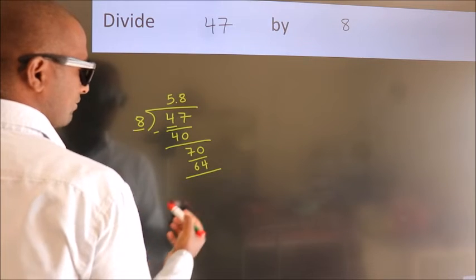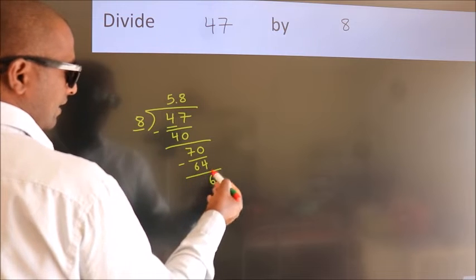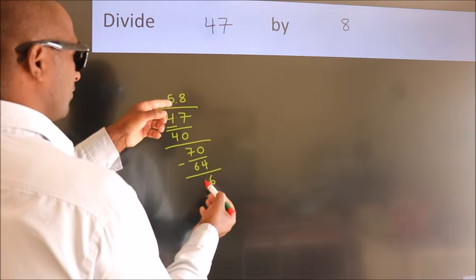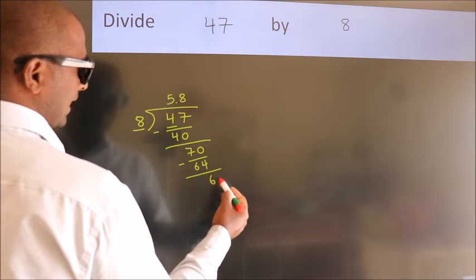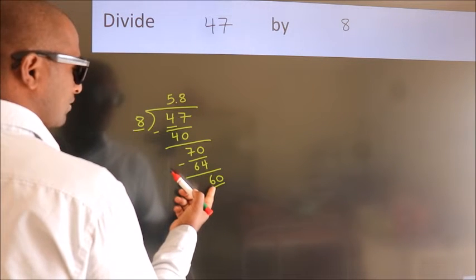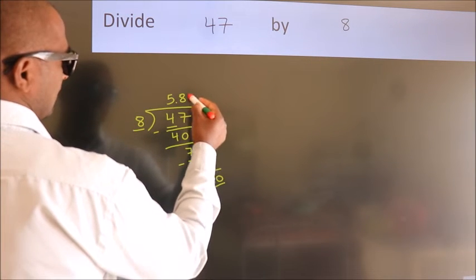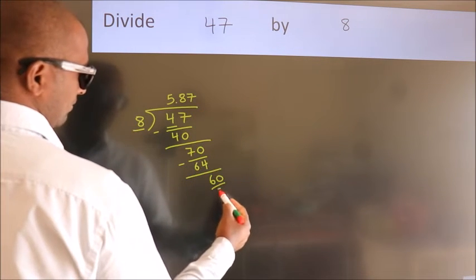Now, we subtract. We get 6. After this, we already have the decimal. So, directly take 0. So, 60. A number close to 60 in 8 table is 8 sevens 56.